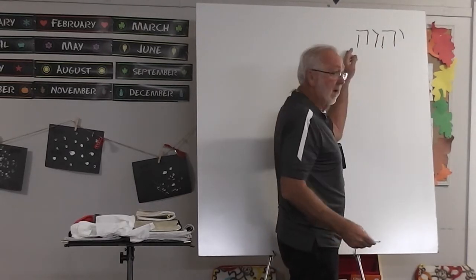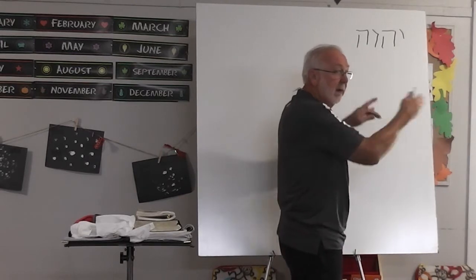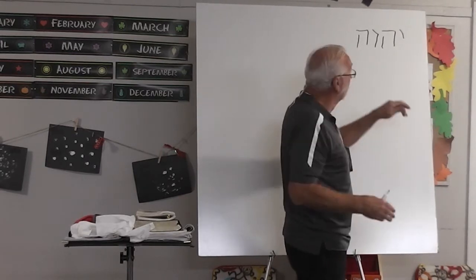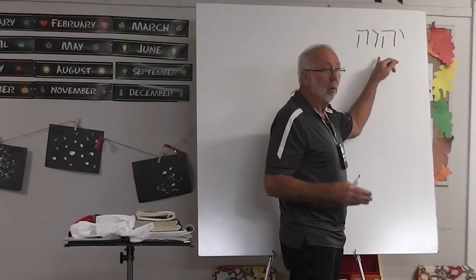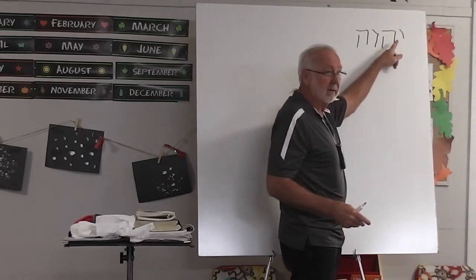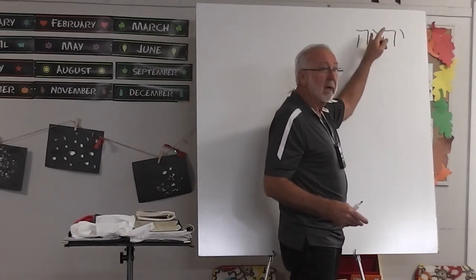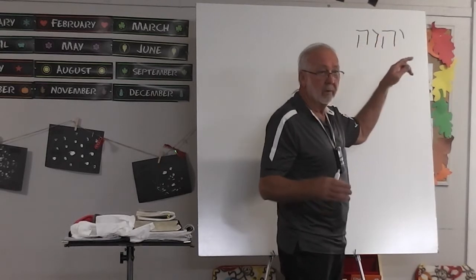The glyphs Yod-Heh-Vav-Heh run from right to left in Hebrew, backwards from English. When we put vowel points in there — A, E, I, O, U — we created a word called Jehovah.